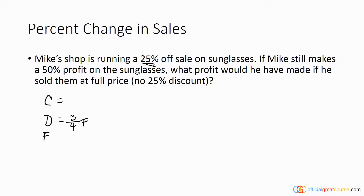We know that the cost is set such that the discounted price represents a 50% profit on cost, which means the discount price must equal 150% of the cost — because 150% represents a 50% increase on cost. 150 over 100 is the same as 15 over 10, which equals three halves C.